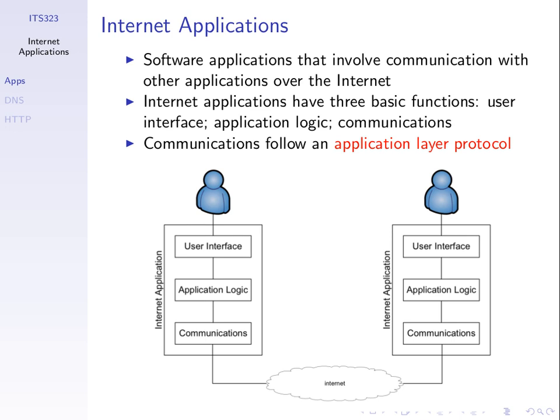For example, if I install Microsoft Office and use the word processor, I don't really need an internet connection — it runs locally as a standalone application. That's not an internet application. But if I install Firefox web browser, I can't do much with it unless I communicate across the internet. Firefox communicates with the web server, so we consider web browsing an internet application.